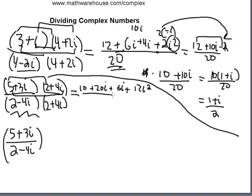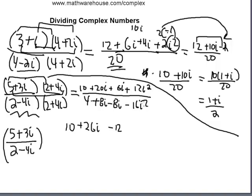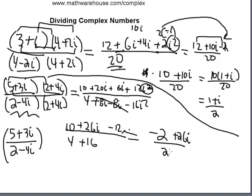For the denominator, using complex conjugates: firsts 2 times 2 is 4, outers give 8i, inners give negative 8i, and lasts give negative 16i squared, which is positive 16. So the denominator is 4 plus 16, or 20. On top: i squared is negative 1, so 12i squared is negative 12, giving 10 plus 26i minus 12, or negative 2 plus 26i over 20. You can factor out a 2 to simplify further.